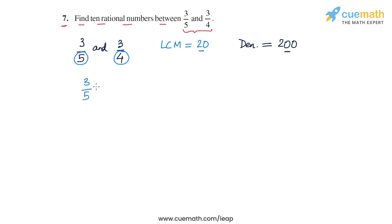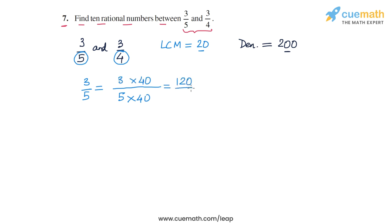To convert 3/5, we multiply both numerator and denominator by 40 — since 5 times 40 equals 200 — giving us 120/200.